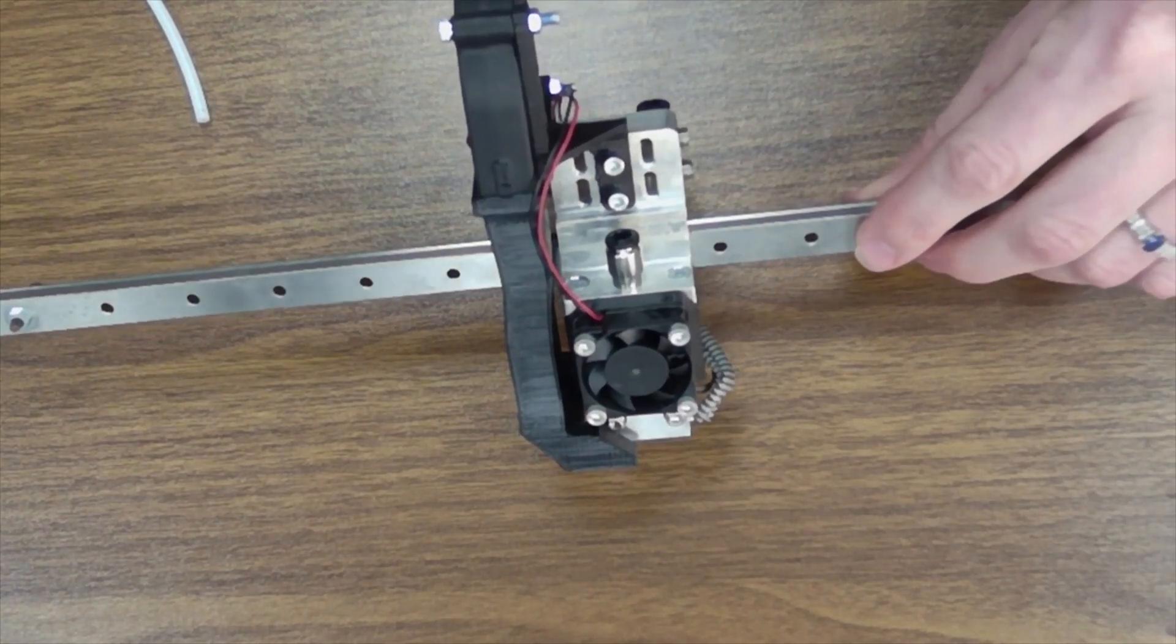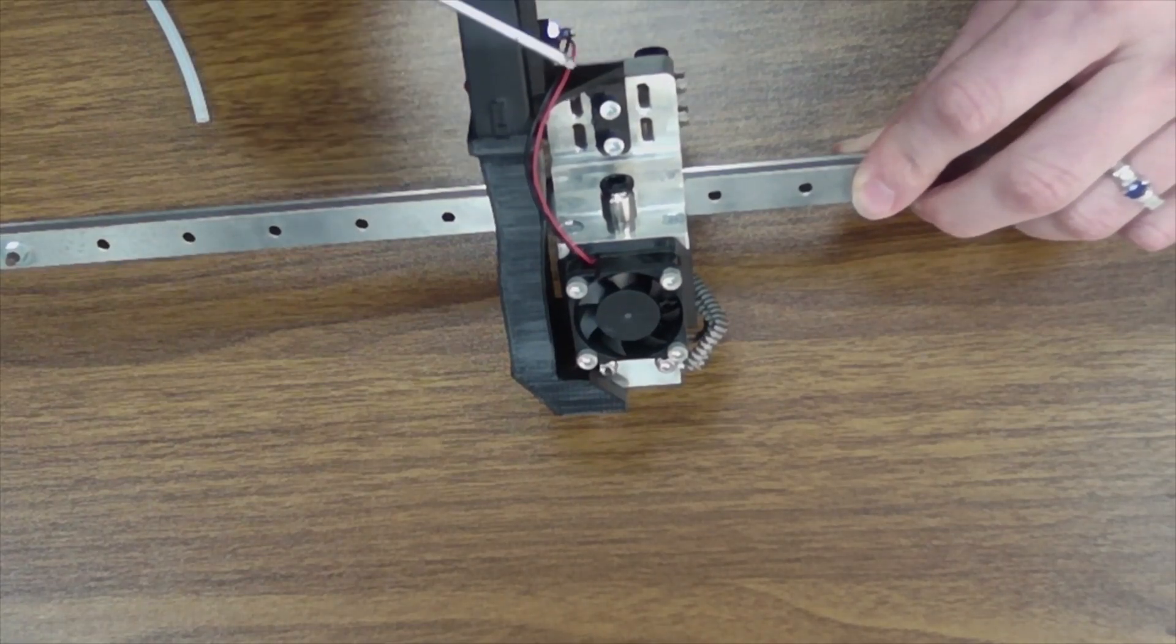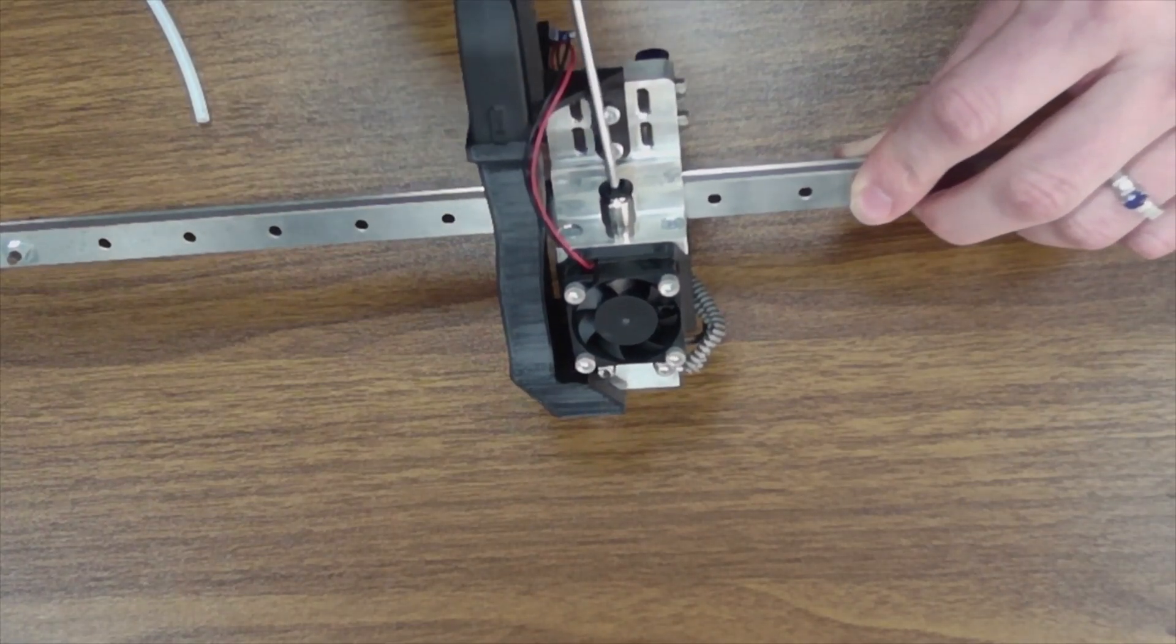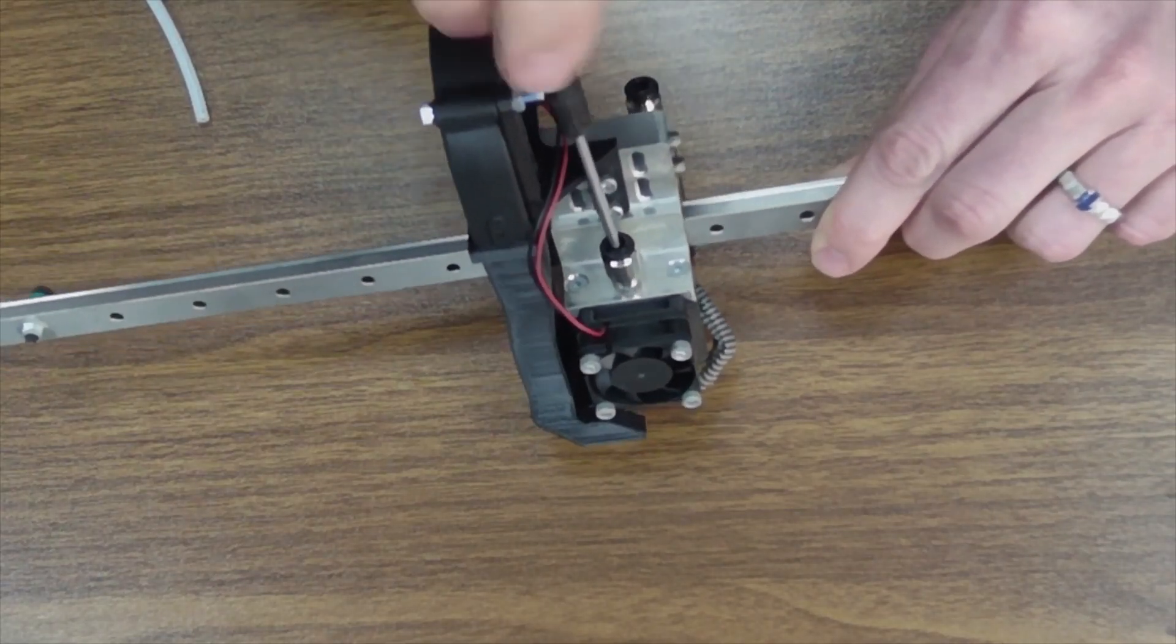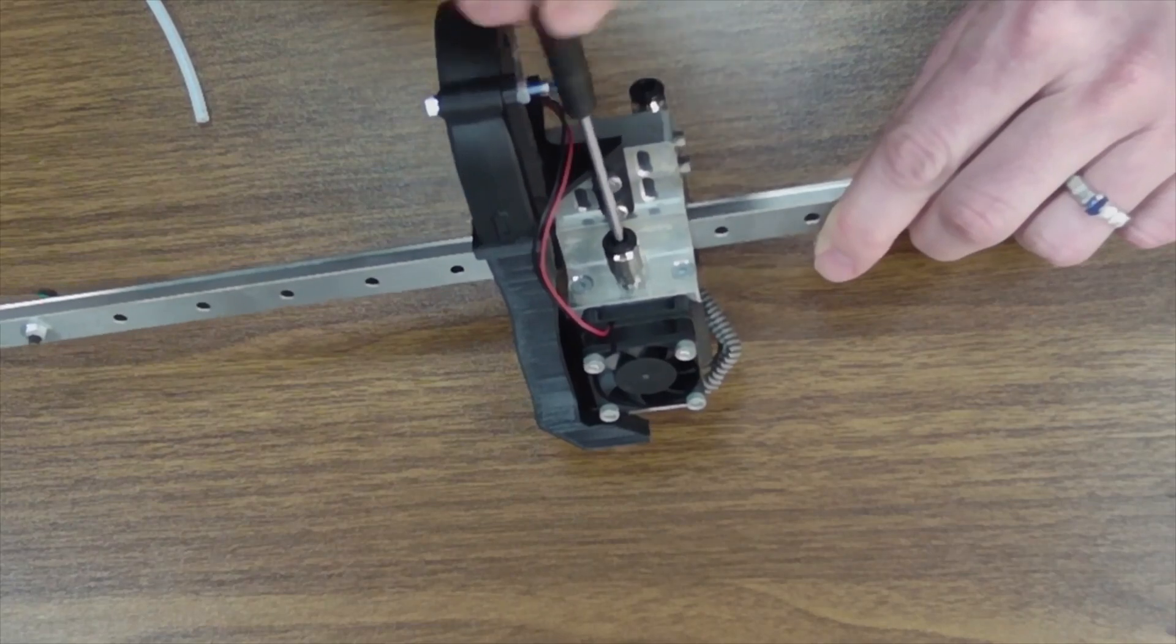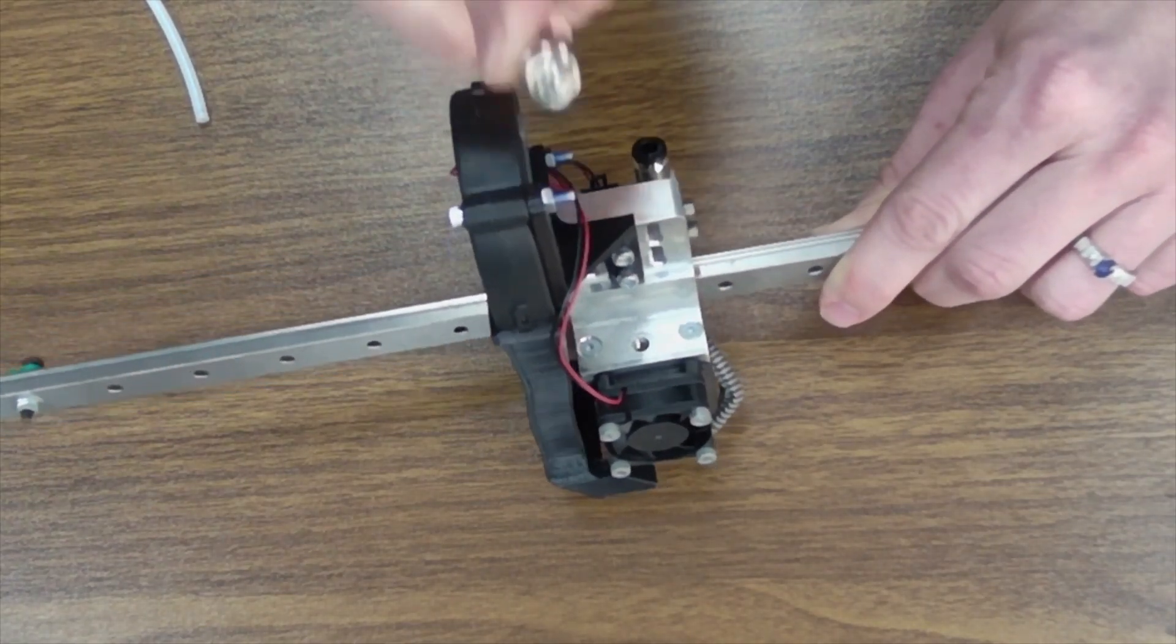The next thing you're going to do is actually unscrew that fitting from the printhead body. So you're going to take a two and a half millimeter driver. You're going to insert it into the fitting and you're just going to unthread it. Now the fittings that come on Edge are keyed inside for a hex drive, so you can see they're easy to take off.